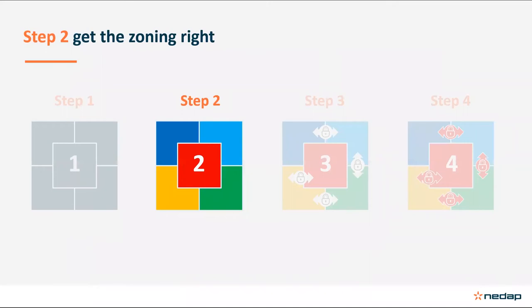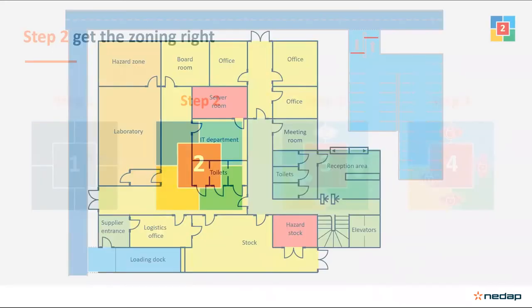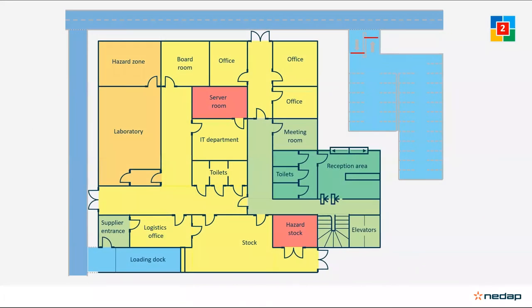Step two involves getting the zoning right, or potentially understanding the possible flaws in the flow plan. What better way to look at it than through real-time examples of how things might not work and what you can potentially do.